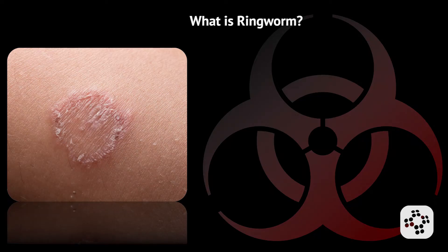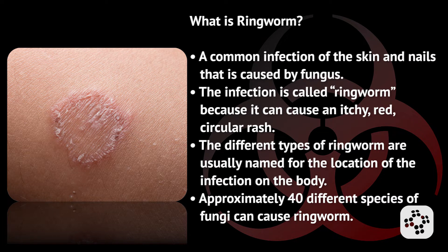Ringworm is a common infection of the skin and nails that is caused by a fungus. The infection is called ringworm because it can cause an itchy red circular rash. The different types of ringworm are usually named for the location of the infection on the body. There are approximately 40 different species of fungi that can cause ringworm, all producing a similar ringworm-like shaped rash.